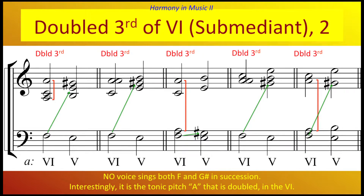It does not matter whether the V or VI chord comes first, as long as we double the 3rd of the 6th chord to ensure that the 6th and 7th degrees — F and G-sharp — are sung by different voices. Everything stays hunky-dory.